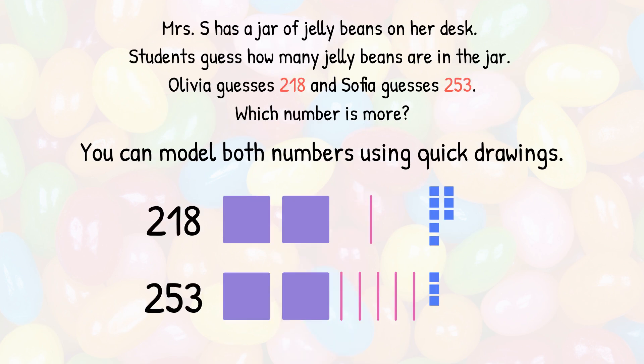You can model both numbers using quick drawings. 218 would be shown as 2 hundreds, 1 ten, and 8 ones. 253 would be shown as 2 hundreds, 5 tens, and 3 ones.